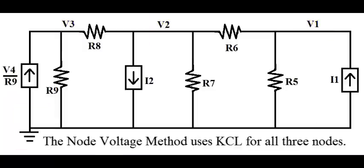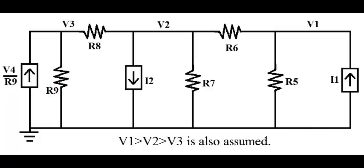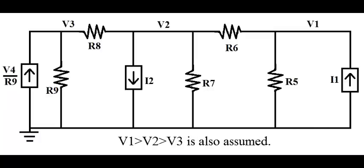The node voltage method uses Kirchhoff's current law for all three nodes. Positive voltages are assumed for V1, V2, and V3. V1 is greater than V2 is greater than V3 is also assumed.